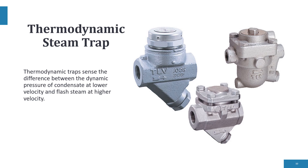Next are thermodynamic traps. These sense the difference between the dynamic pressure of condensate at lower velocity and flash steam at higher velocity. This is the most common steam trap used in commercial and industrial plants due to its compact, simple, lightweight design and large condensate capacity for its size.